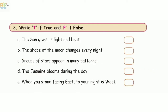Section 3: Write T if true and F if false. First: the sun gives us light and heat — true. Second: the shape of the moon changes every night — true. Third: groups of stars appear in many patterns — true. Fourth: jasmine blooms during the day — false, it blooms at night.